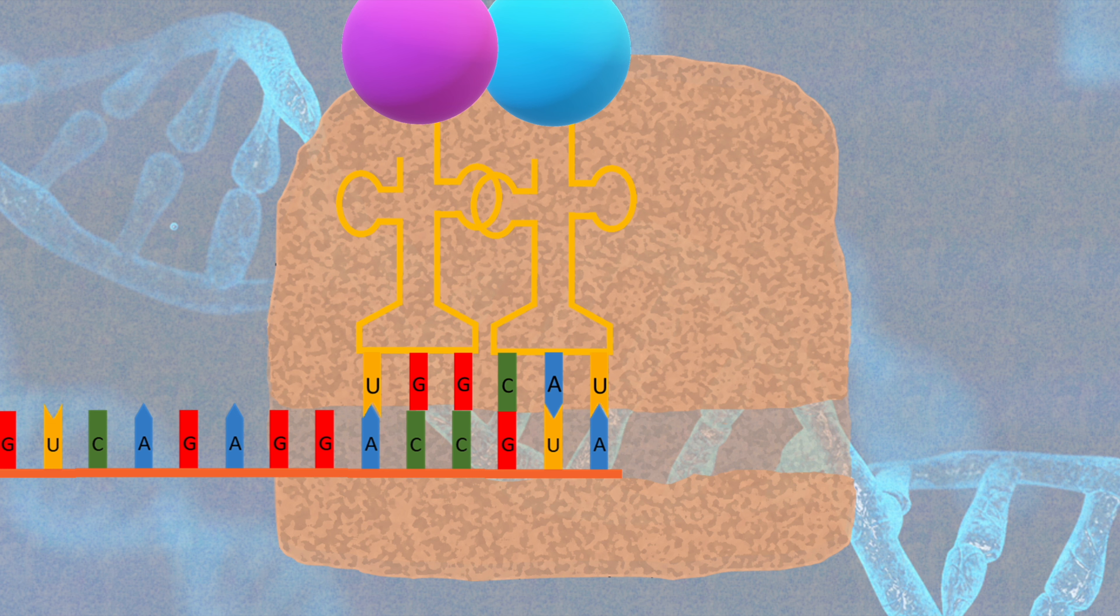Then, another type of RNA, rRNA, short for ribosomal RNA, creates a bond between the two amino acids. Once the bond is completed, the first tRNA detaches from the mRNA, leaving behind the beginning of an amino acid chain, called a polypeptide.